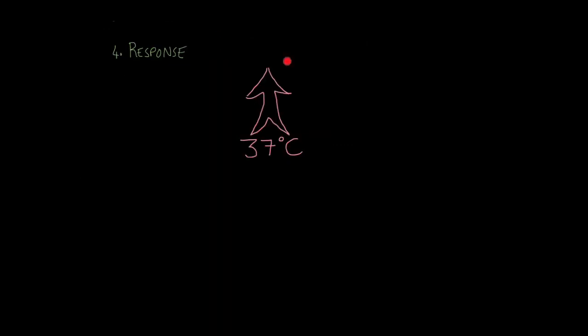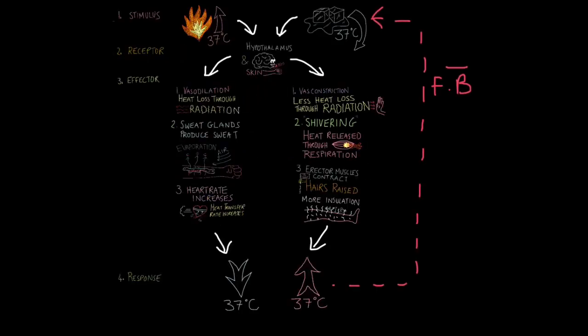And the response, of course, is our body temperature increases. So once again, we've achieved negative feedback. So there's a lot to take in there, so let's have a quick review. Firstly, stimulus, body temperature increases. Receptor, hypothalamus and skin detect the change. The effectors, vasodilation, that increases heat loss through radiation. Sweat glands produce sweat, so it increases heat loss through evaporation, and your heart rate increases, so the heat transfer rate increases. The result of all this is body temperature falls, so you get negative feedback correcting the initial change.